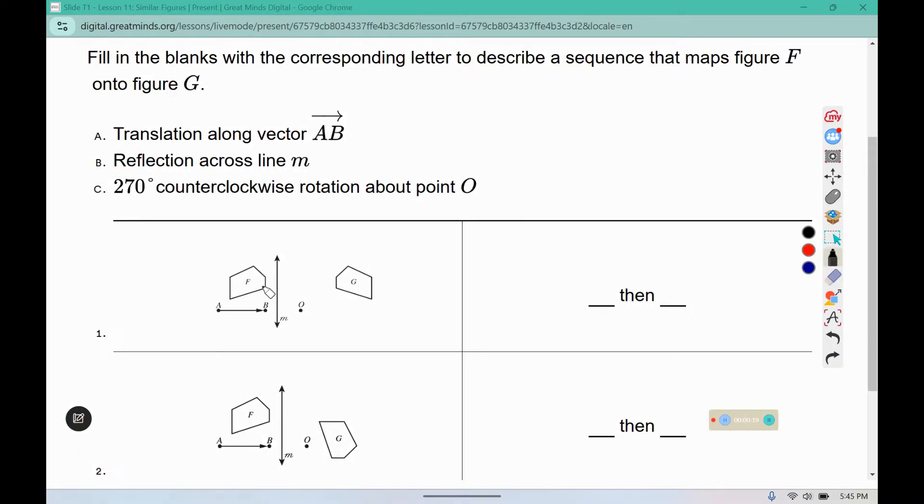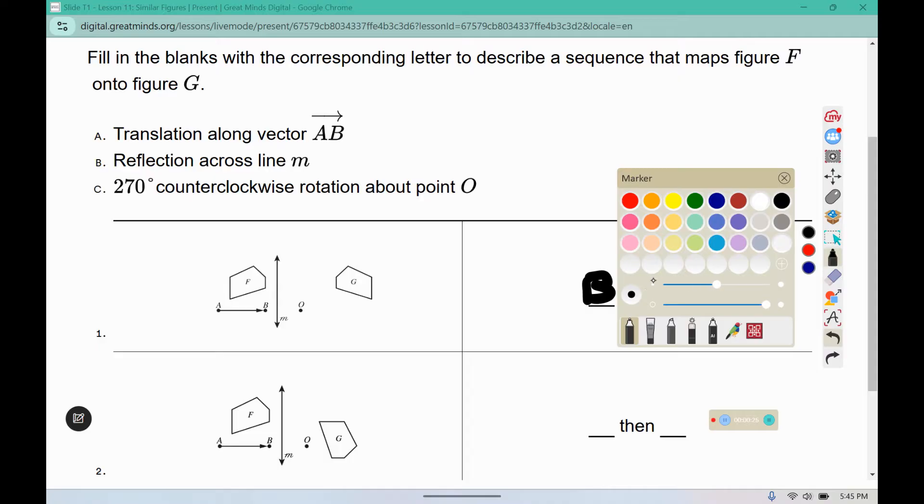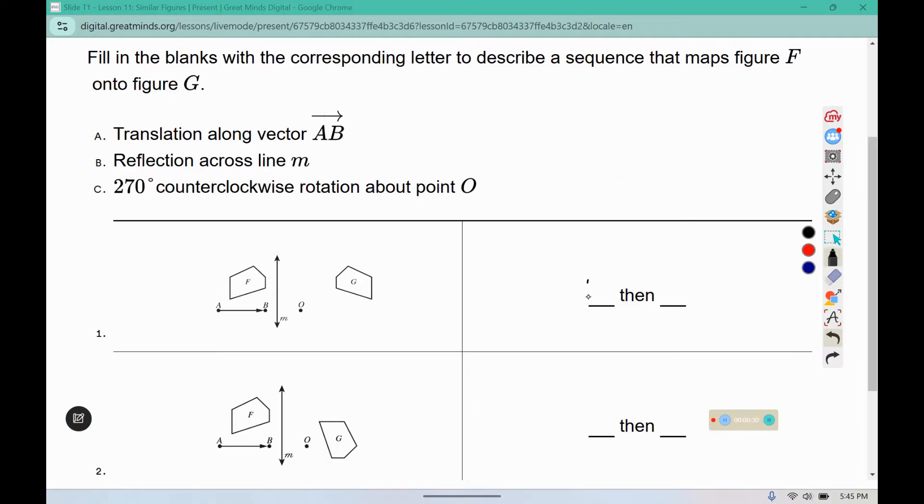So the first thing that we need to do is we're going to reflect over line M, which is B, which will put our shape on this side, and then we need to slide it over, which is the translation. So B, then A.